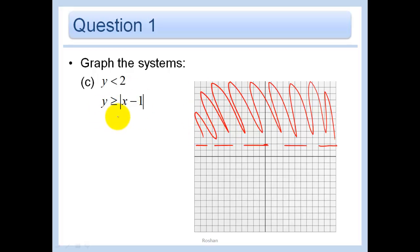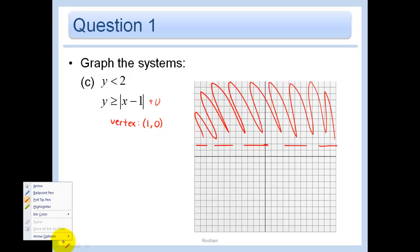And then, look, we have an absolute value. What's going to happen? This means that we are shifted 1 unit to the right, and it's plus 0. So 0 units up. In other words, the vertex is just 1, 0. So let me just change colors. So I'm going to start at 1, 0.